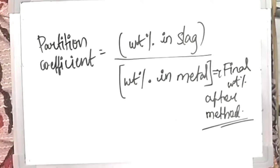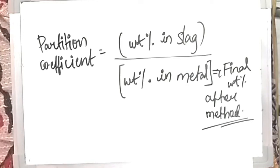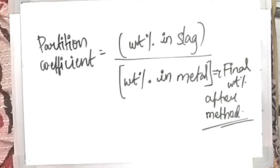Now we'll take an example and solve it. The question is: one ton of liquid steel containing 0.05% sulfur is brought into equilibrium with 0.1 ton of slag which contains no sulfur. If the sulfur distribution ratio is 10 at equilibrium, then the final sulfur content of the steel will be? Let's quickly write the given data.